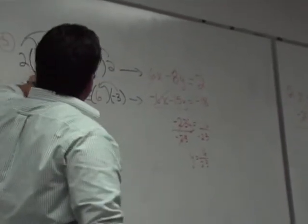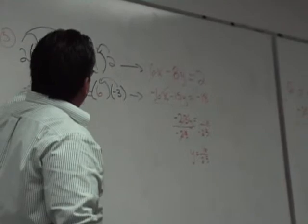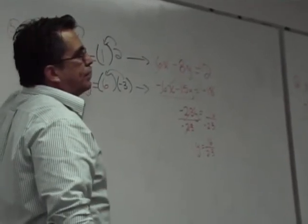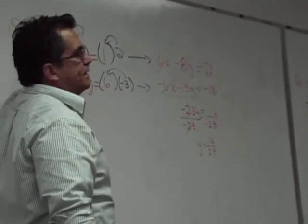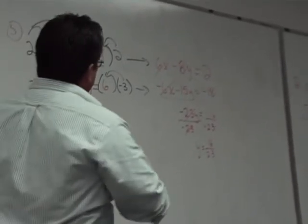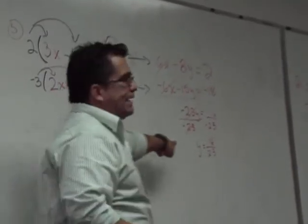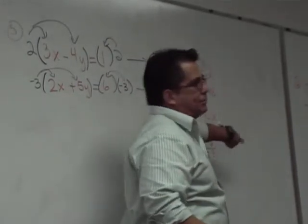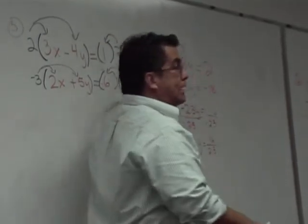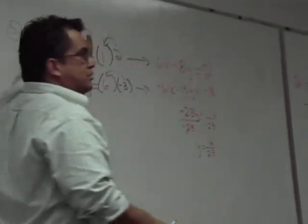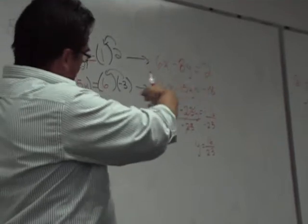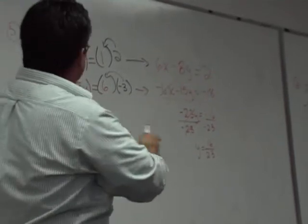You can do this same process one more time with the original equations, but this time ask yourself: I want to cancel the y's. How can I make that happen? So once you have an ugly fraction answer and you don't want to plug it in, take the original problem again.